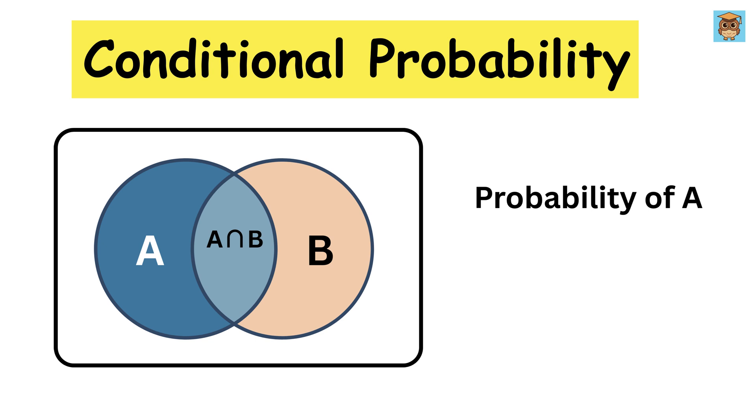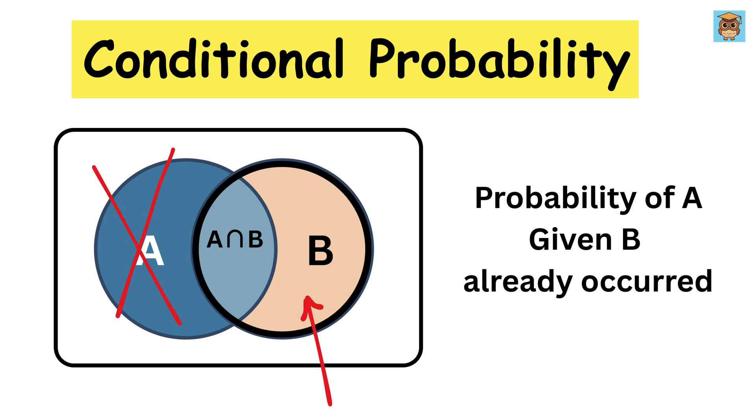Suppose you want to find the chance of some event A happening, but you already know that another event B has happened. This means we are focusing only on the B circle, and inside that circle, the overlapping area is the part that also has A. So the probability of A given B is just asking: out of everything in the B circle, how much is also in A? That's exactly what conditional probability means.